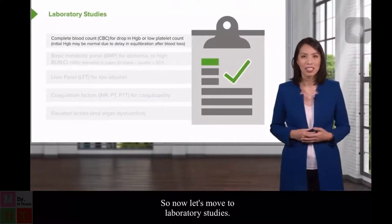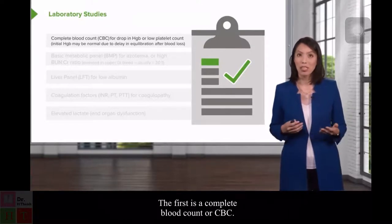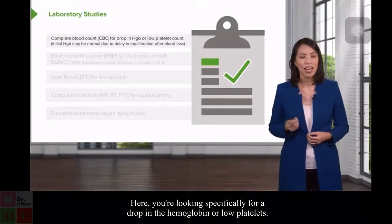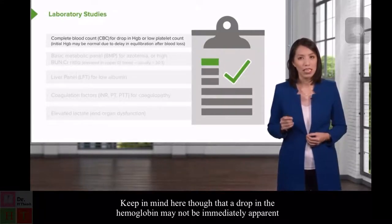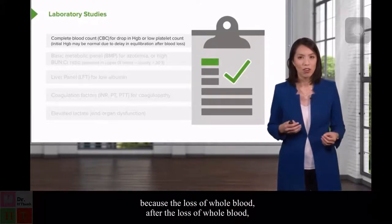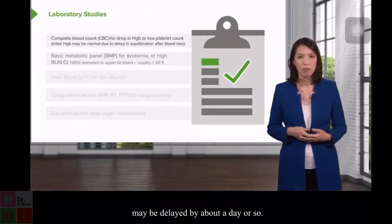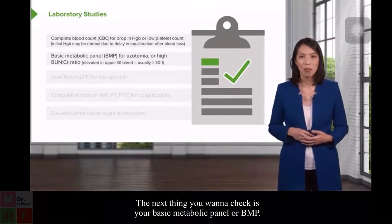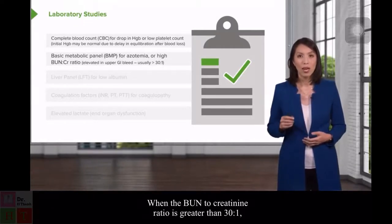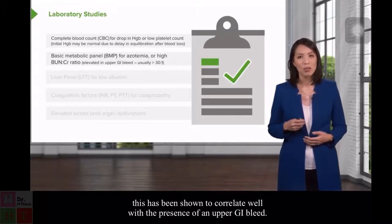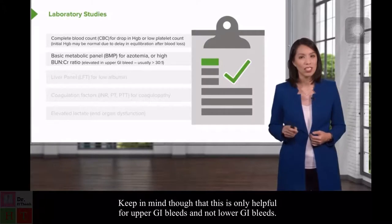Now let's move to laboratory studies. Always obtain a complete blood count or CBC, looking specifically for a drop in hemoglobin or low platelets. Keep in mind that a drop in hemoglobin may not be immediately apparent, as after whole blood loss it takes time for the body to re-equilibrate — that drop may be delayed by about a day. Next, check a basic metabolic panel or BMP. A BUN to creatinine ratio greater than 30 to 1 has been shown to correlate well with the presence of an upper GI bleed, though this is only helpful for upper, not lower, GI bleeds.